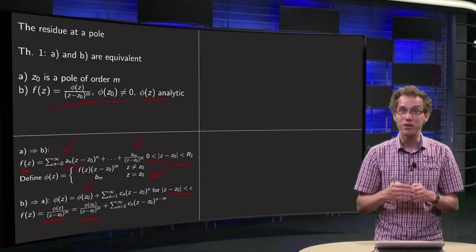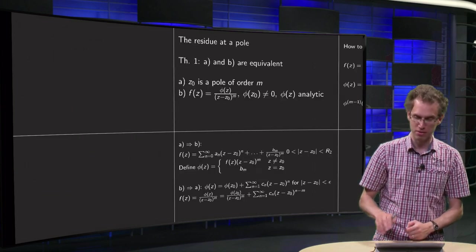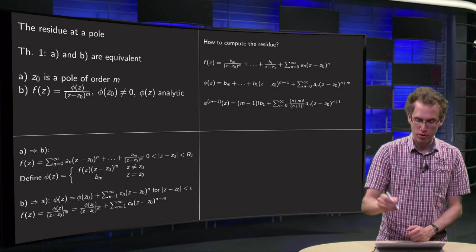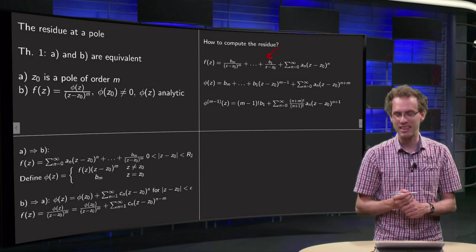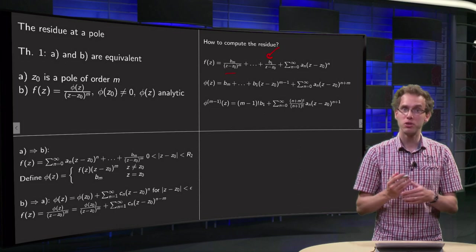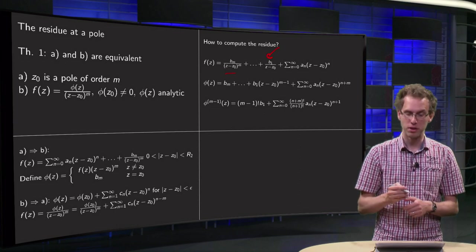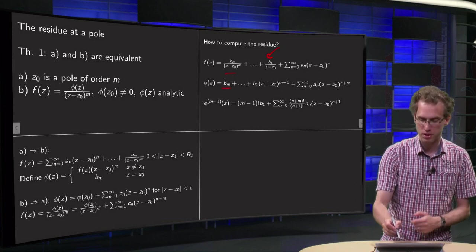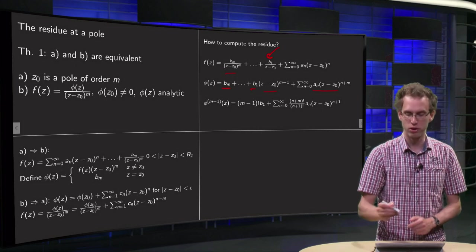And now we're going to use our φ(z) to compute the residue of f(z) in z0. So how can we compute that? Well, what we want is this b1 term over here, but how are we going to get it? There's some rubbish in front of it. Well, we're going to use our φ(z), so φ(z) equals f(z) times (z-z0)^m, so then we have our bm plus etc., and here we get (z-z0)^(m-1), and here's some other rubbish.